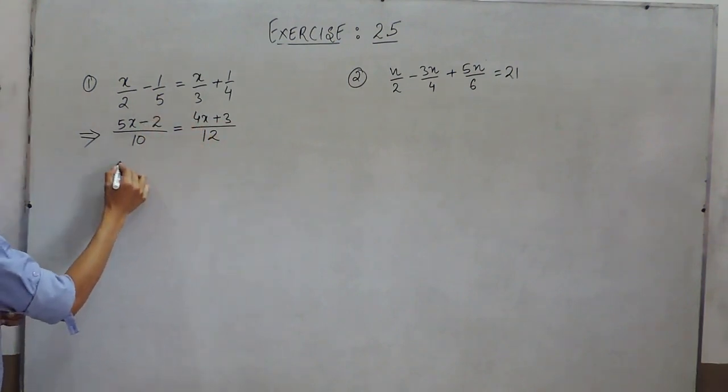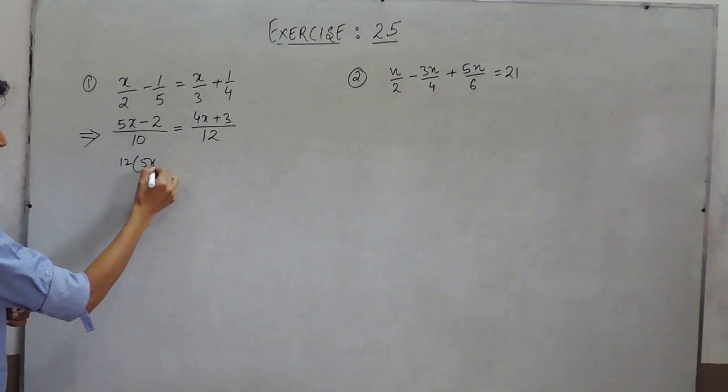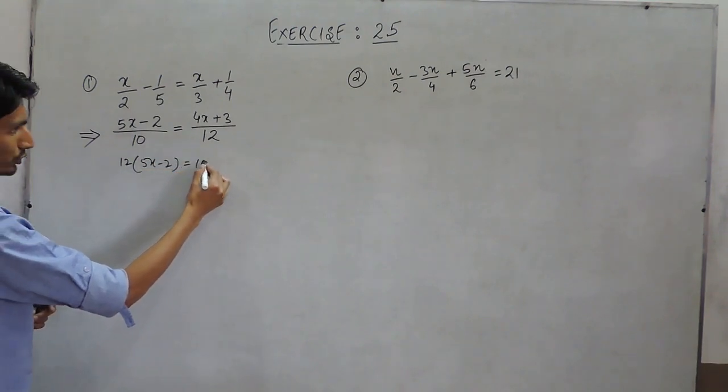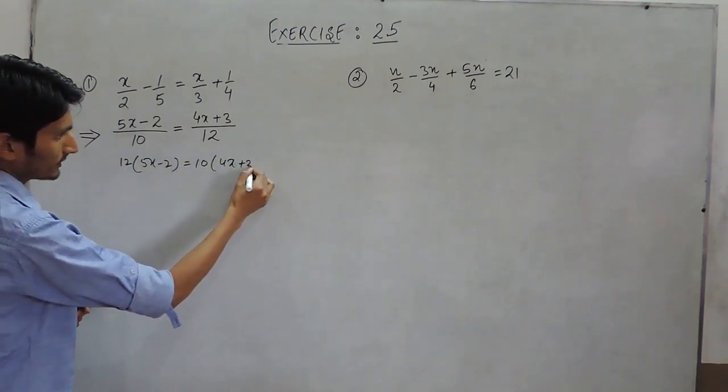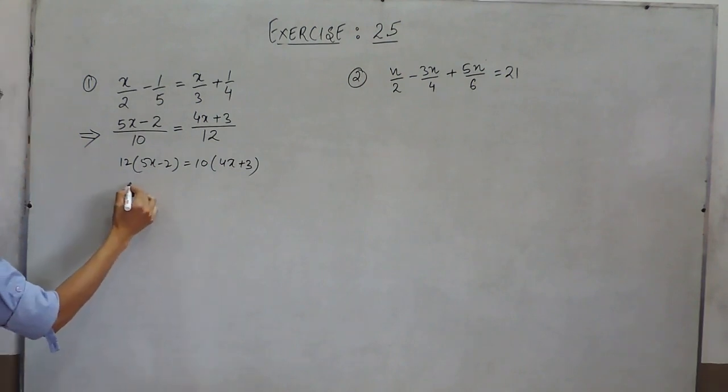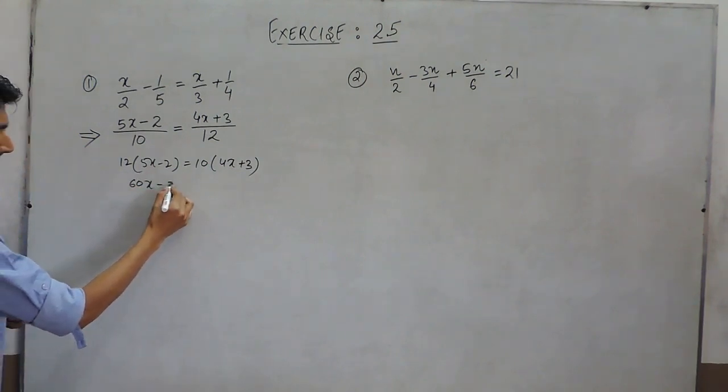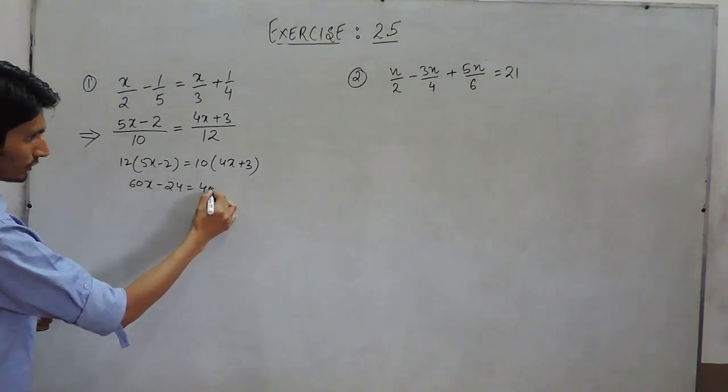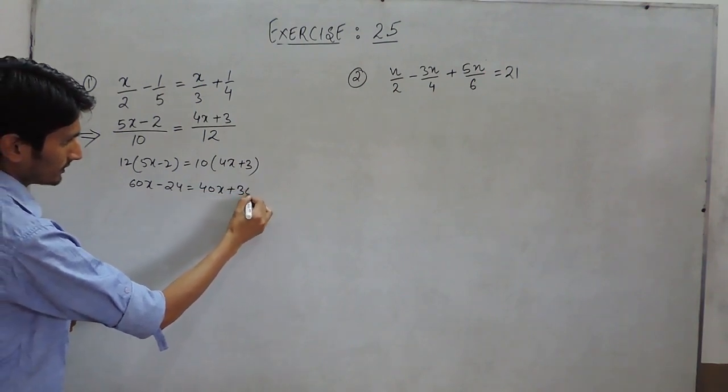Cross multiplying it, it will give 12 into 5x minus 2 equals 10 into 4x plus 3. This is 60x minus 24, this is 40x plus 30.